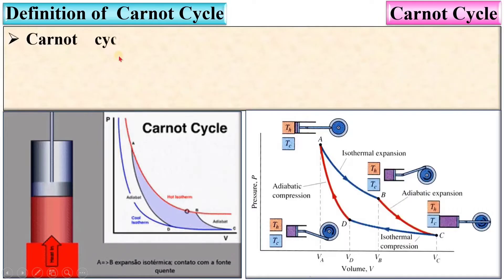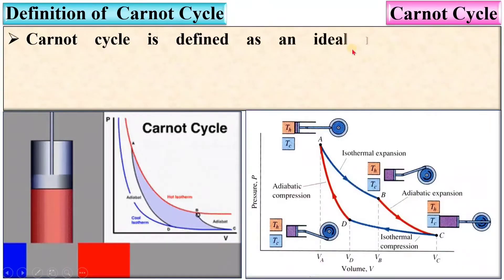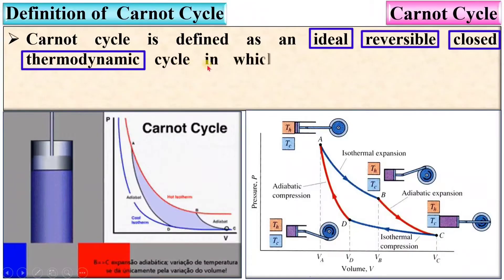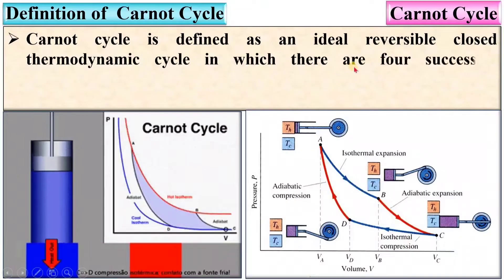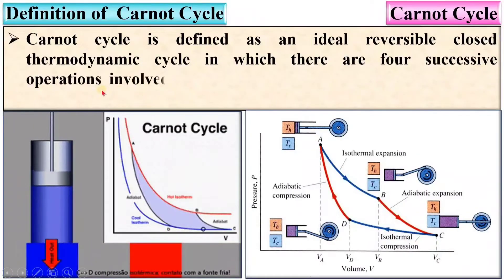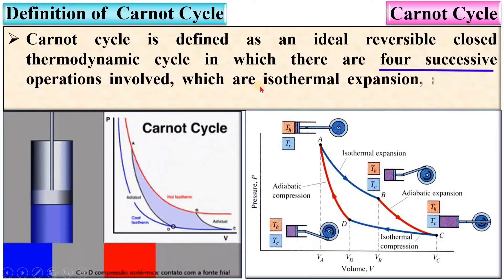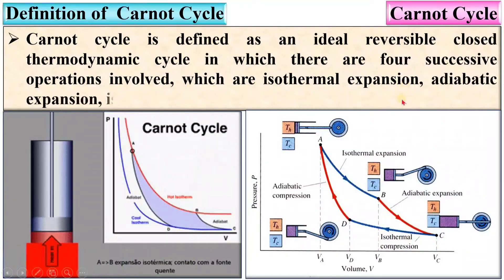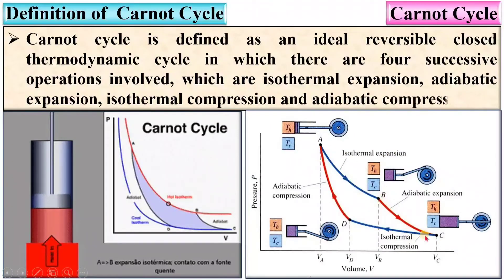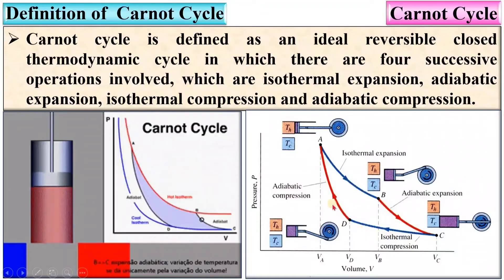The Carnot cycle is defined as an ideal reversible closed thermodynamic cycle in which there are four successive operations: isothermal expansion, adiabatic expansion, isothermal compression, and adiabatic compression.